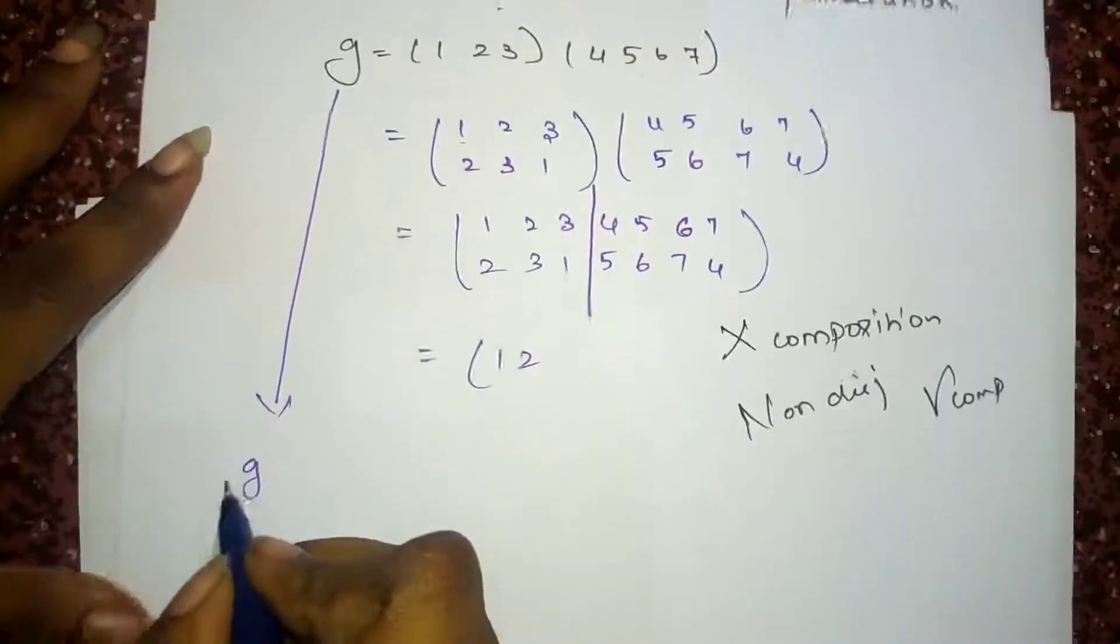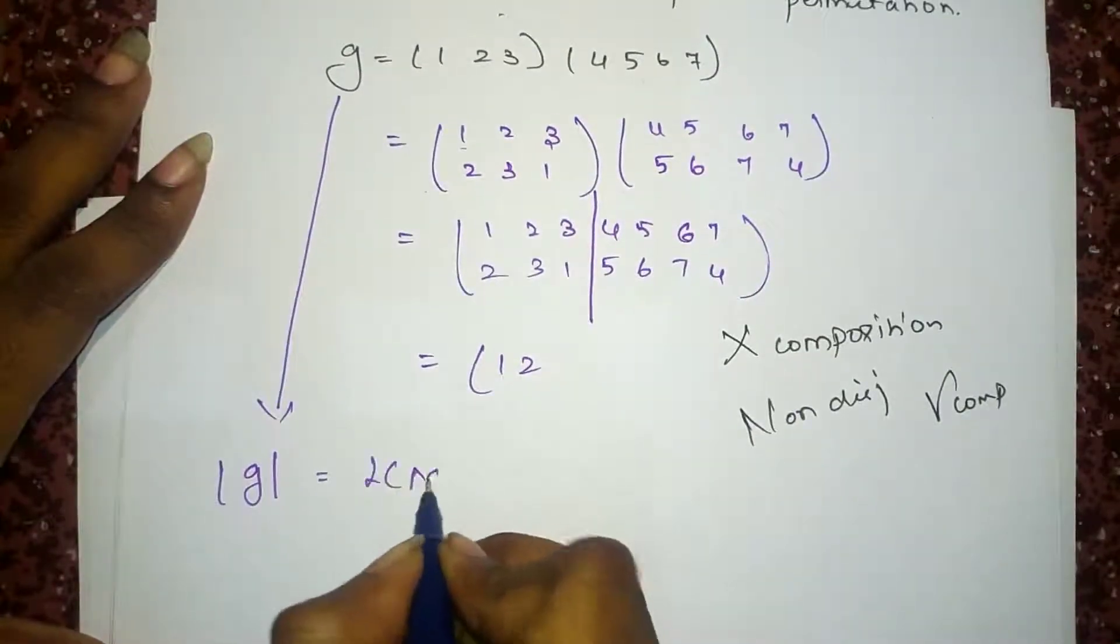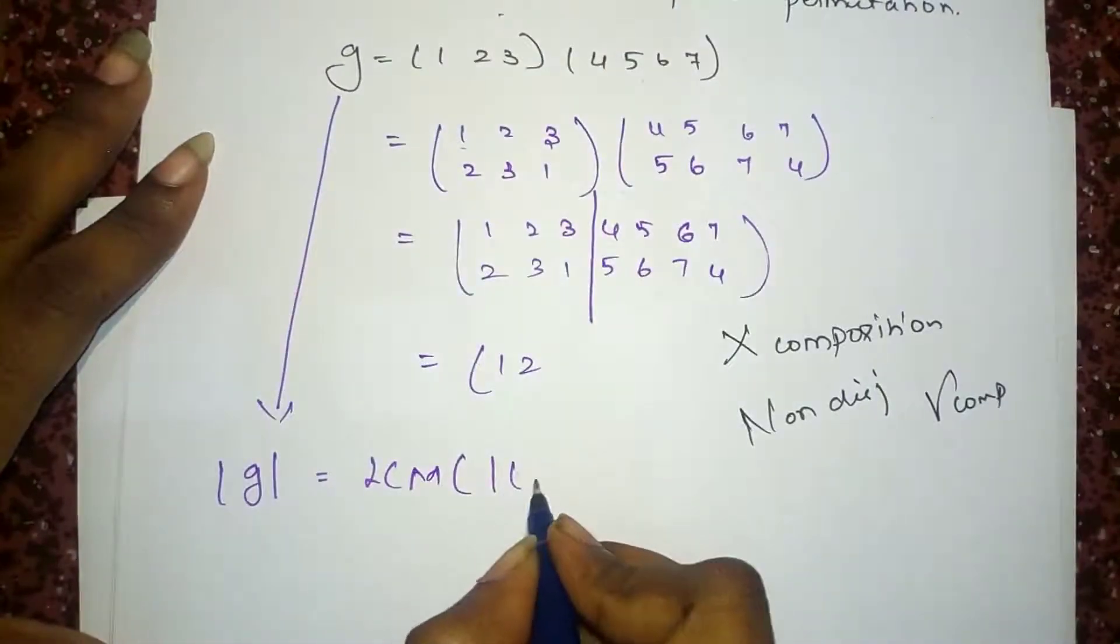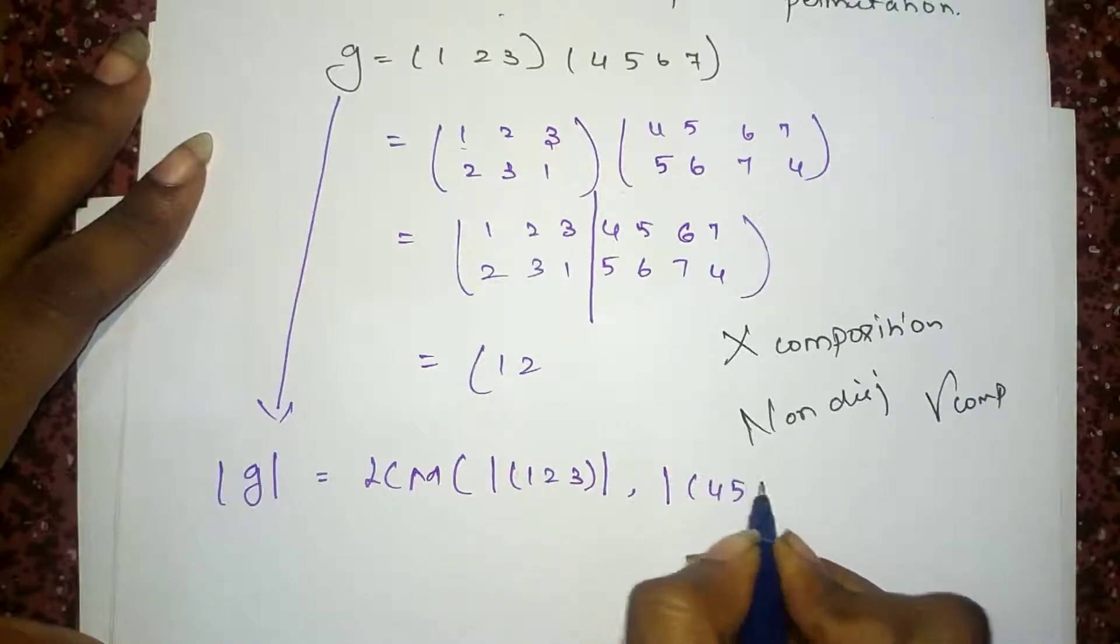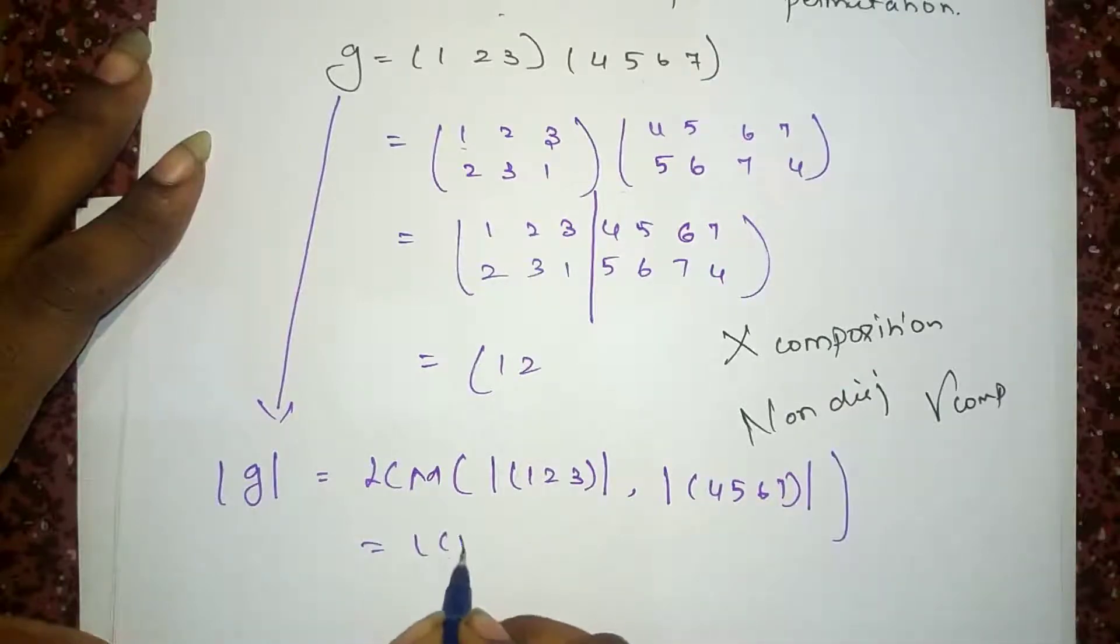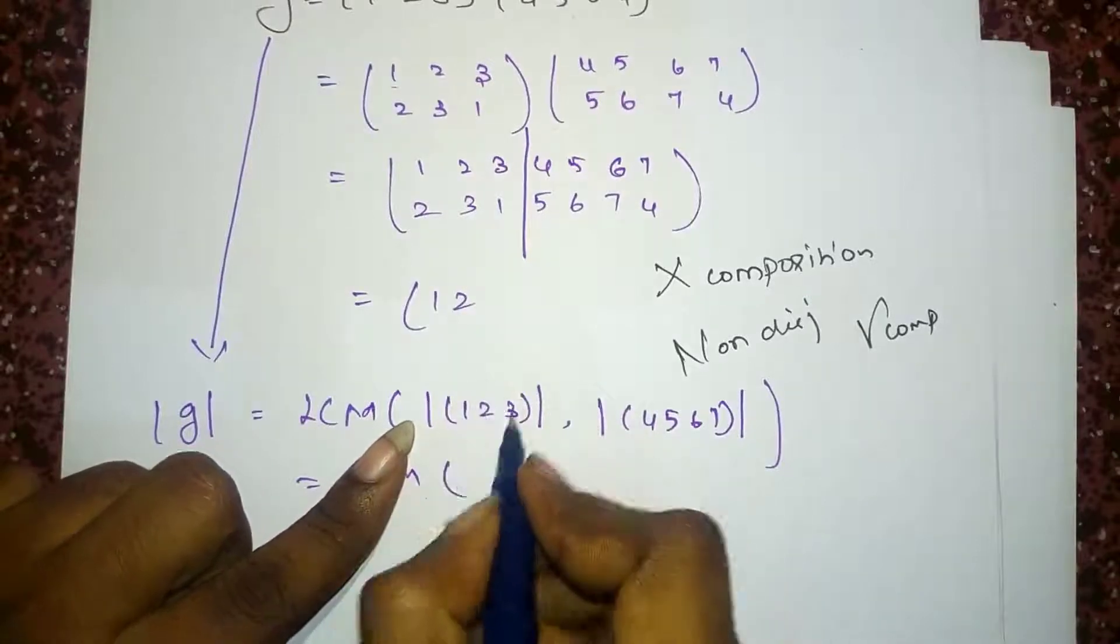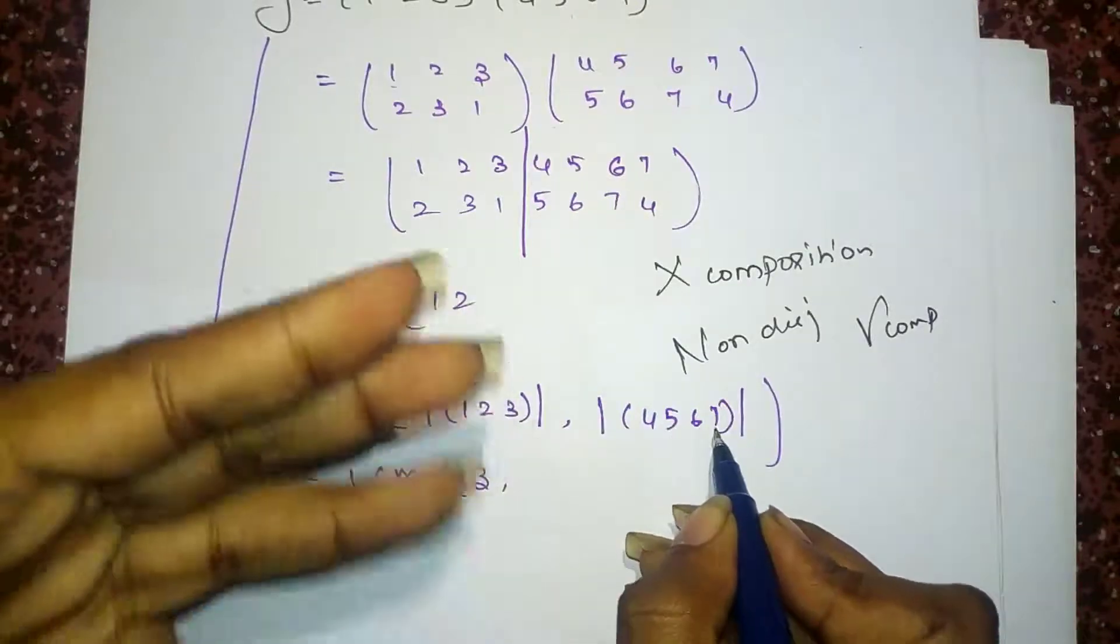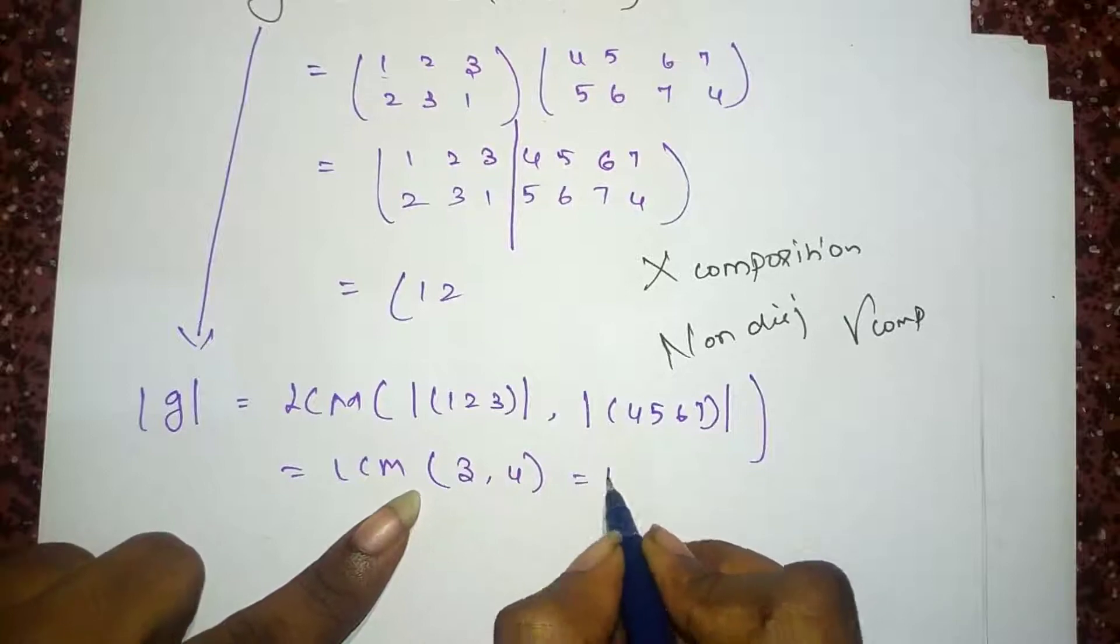I am going to find the order of g, which is LCM of order of this. I will write this as 1, 2, 3 and order of 4, 5, 6, 7. LCM of the length of this cycle is 3. The length of this cycle is 4. So, LCM of these two is 12.